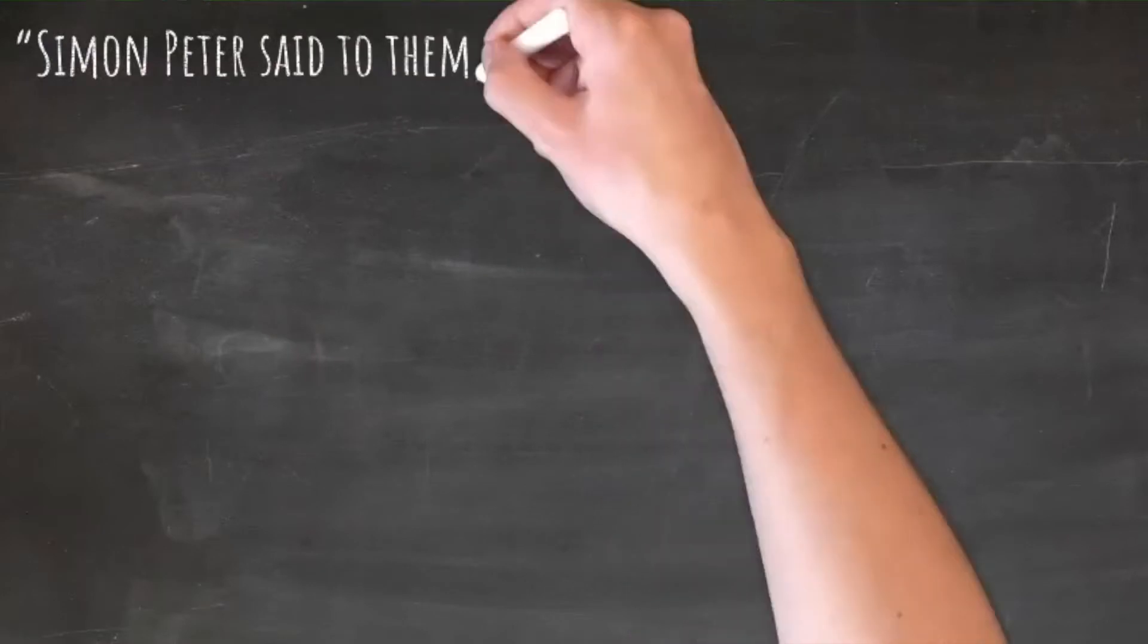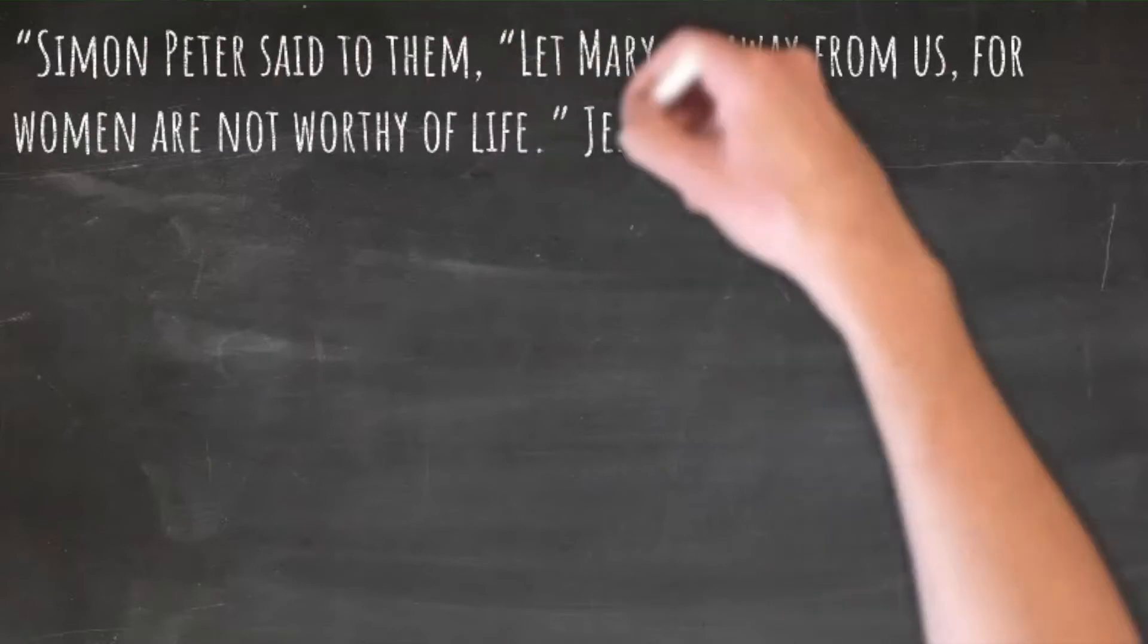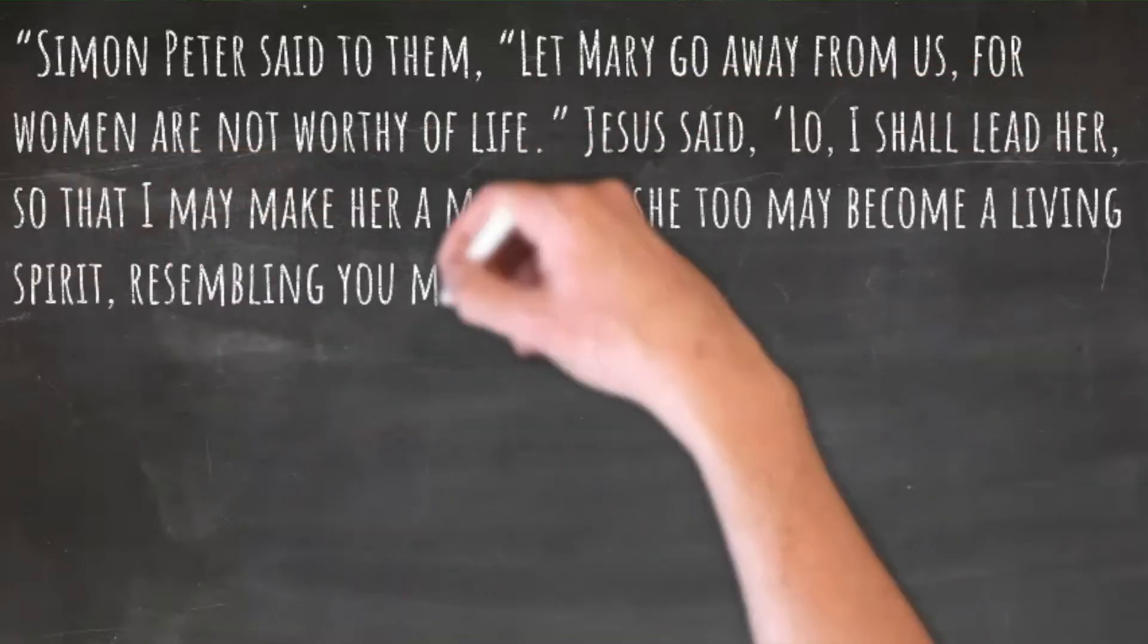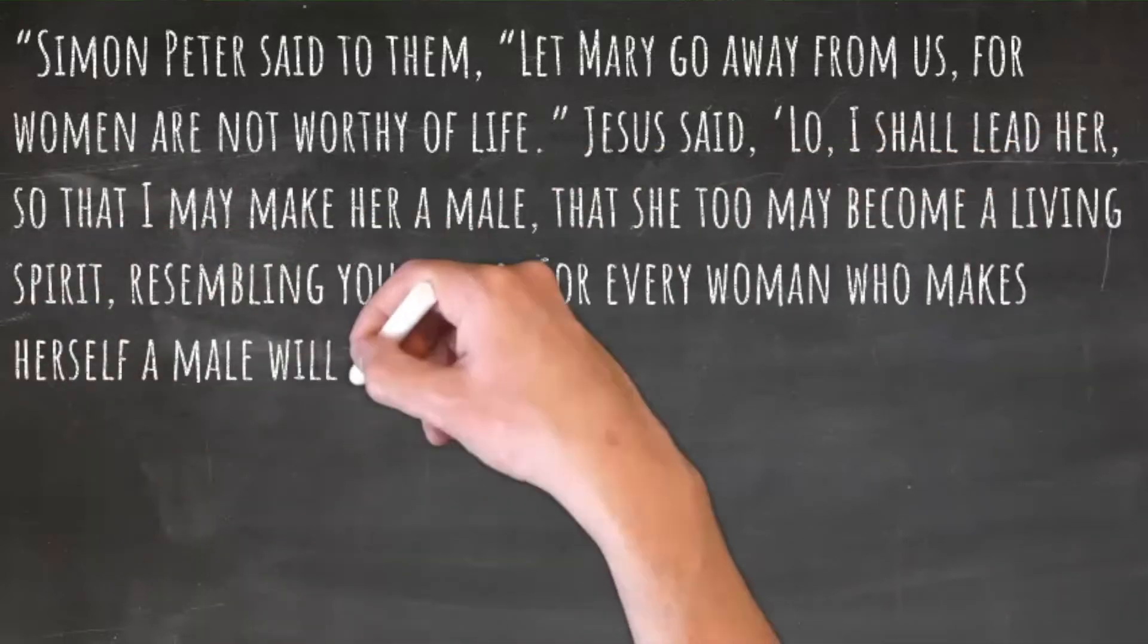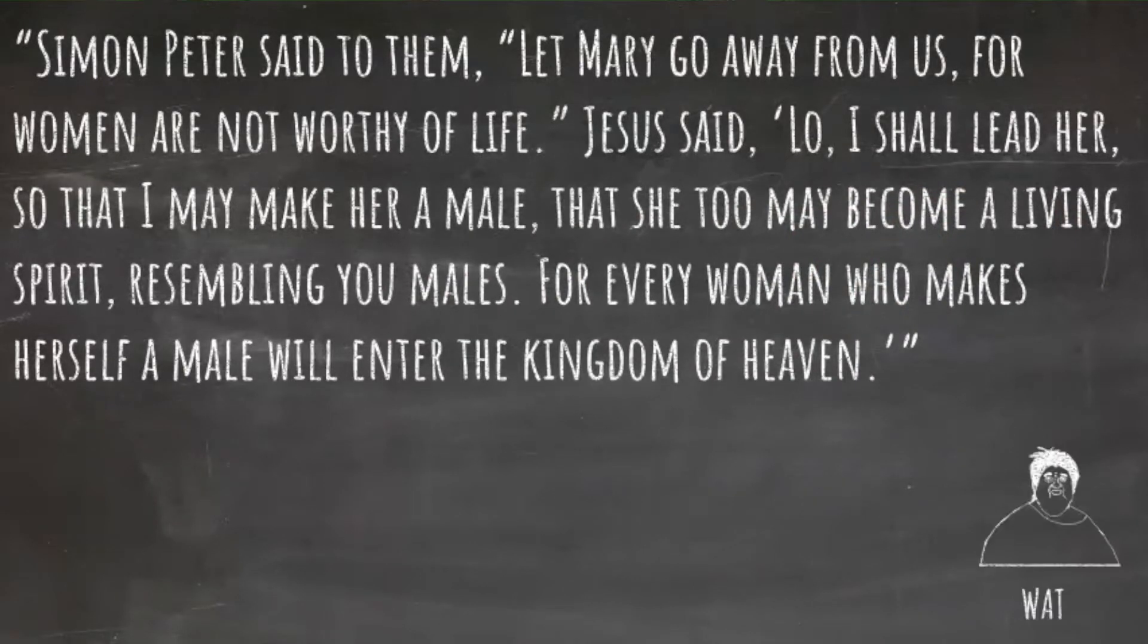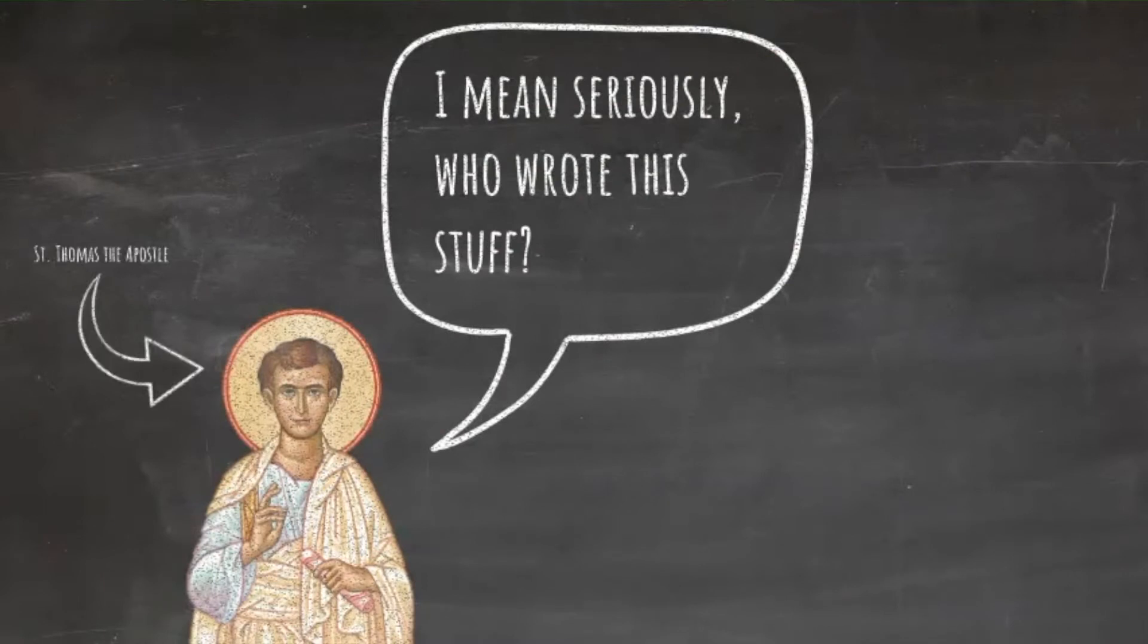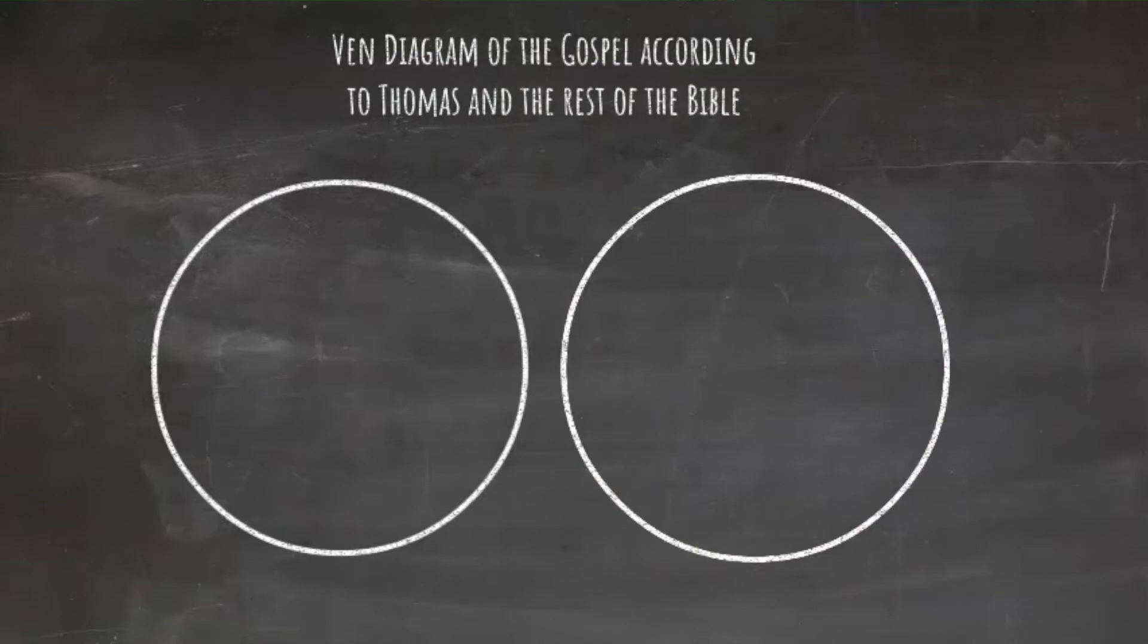Every now and again you'll hear about the gospel of Thomas. It'll make a headline in the news and some folks will act like it's got something to add to our picture of Jesus. The problem is that it has some pretty big doctrinal inconsistencies in it. We'll just give you one of them. Listen to this crazy statement that closes out the gospel of Thomas. Quote: Simon Peter said to them, let Mary go away from us for women are not worthy of life. Jesus said, lo, I shall lead her so that I may make her a male that she too may become a living spirit resembling you males for every woman who makes herself a male will enter the kingdom of heaven. Wow. So this is a piece of doctrine that clearly contradicts so many other parts of scripture that it cannot be considered scripture. And the vast majority of the church has never recognized it as being part of the canon.